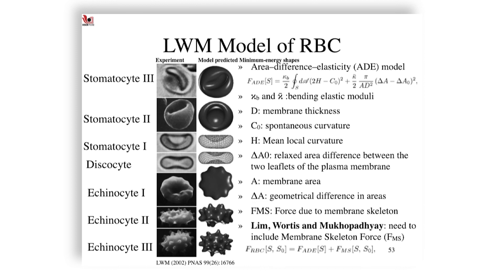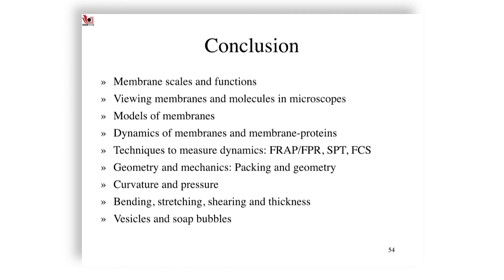We would like to say that we are getting closer to an understanding of the membrane, but there are a lot of things more to be done because pure red blood cell membrane structure is not really a representation of what true membrane might be like. I'm going to conclude that we've talked a little bit about membrane scales and functions, viewing membranes from molecules to microscopes, models of membranes, dynamics, how to measure them—we will talk about some of these methods—packing, geometry, curvature and pressure, bending, stretching, shear, thickness, vesicles and soap bubble approximations. We will return to the measurement later, but for the moment I'm going to stop here. We will continue next time with a slightly different topic which relates to measurement but of something that we had not talked about, which is related to our paper, and then move on to entropy and statistical mechanics. Thank you.